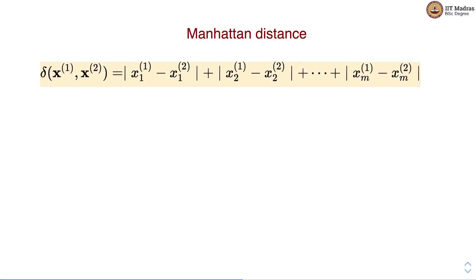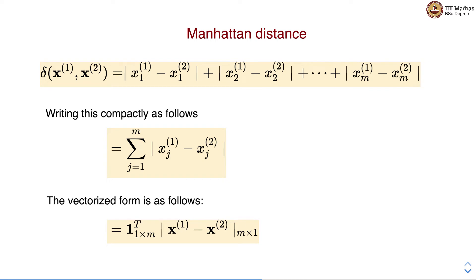Let's look at the Manhattan distance. We can write this compactly as sum over m features of the absolute value of the difference between two data points on feature j. And in vectorized form it can be written as the multiplication of two vectors: the first vector is a vector of 1 with shape 1 cross m, and we multiply the transpose of this vector with the absolute value of the difference between vector x1 and x2.